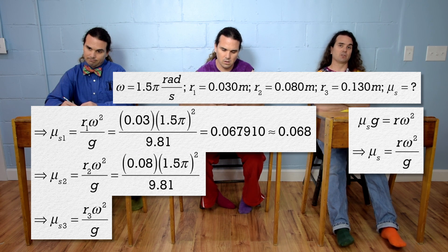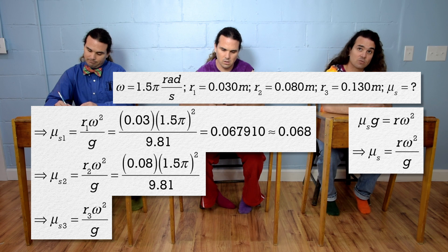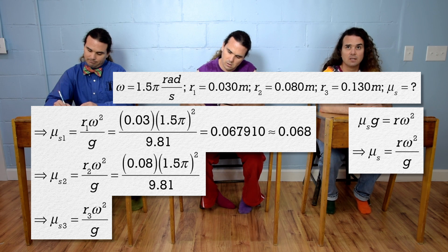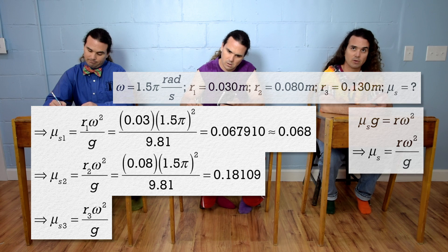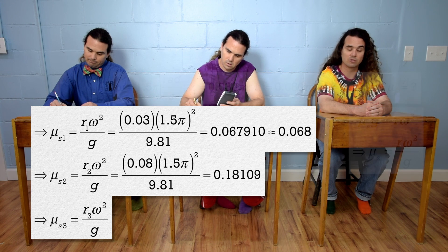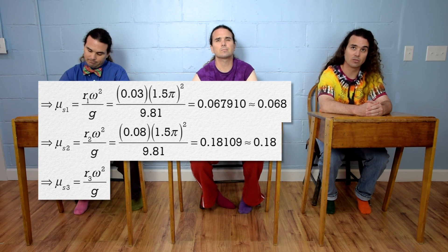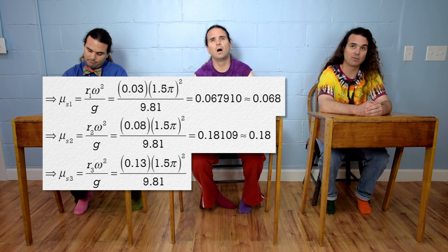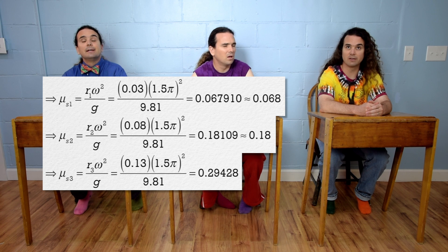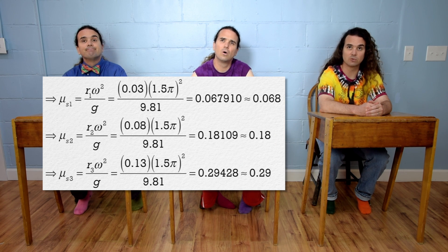The second one is 0.08 times 1.5 pi squared divided by 9.81, which is 0.18109 or 0.18. The third one is 0.13 times 1.5 pi squared divided by 9.81, which is 0.29428 or 0.29.